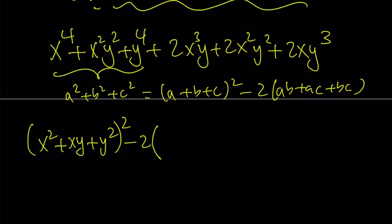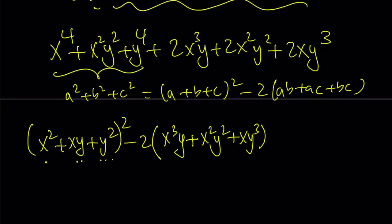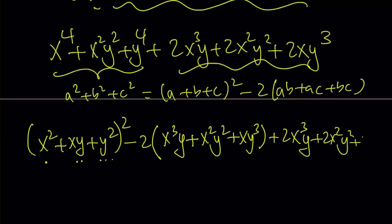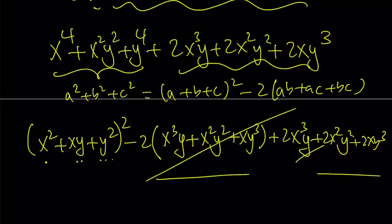Multiplying x squared and x y gives x cubed y. Multiplying the first and third gives x squared y squared. Multiplying the second and third gives x y cubed. And then I still have to add two x cubed y plus two x squared y squared plus two x y cubed. These two groups are opposites, so they completely cancel out, leaving us with the perfect square x squared plus x y plus y squared, quantity squared. There are other ways to get that, but I wanted to use this method. I'm done with the numerator.